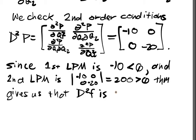It gives us that D²F is, in particular, it's negative definite for all Q1 and Q2. So on everything on that space, it's negative definite. And therefore...